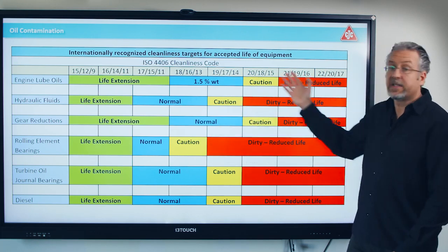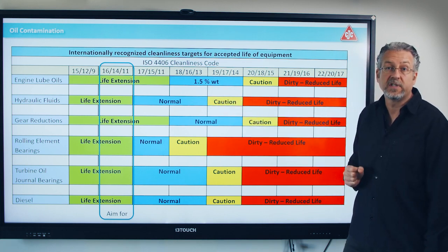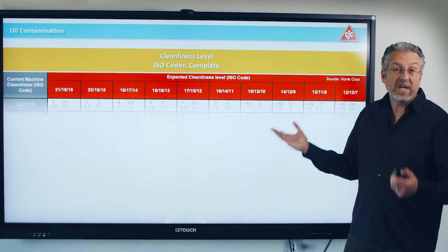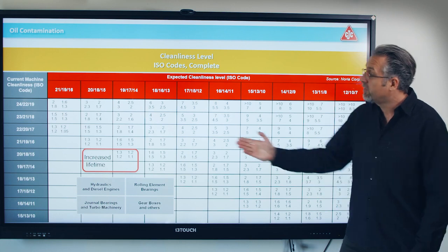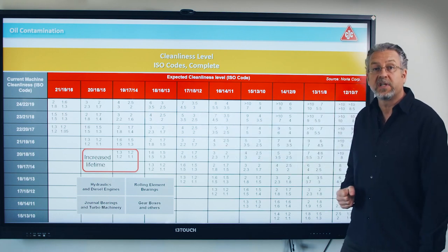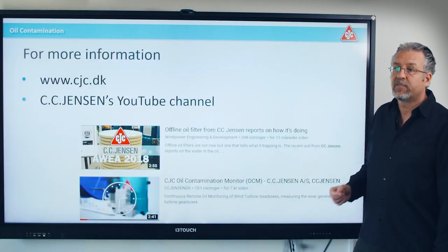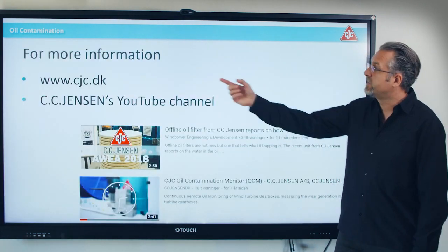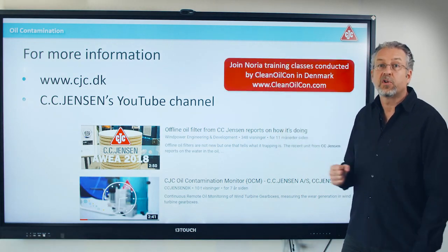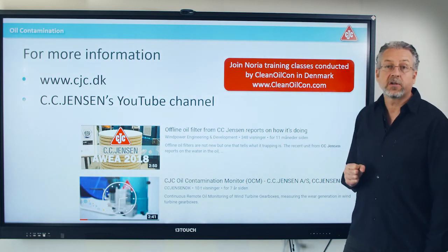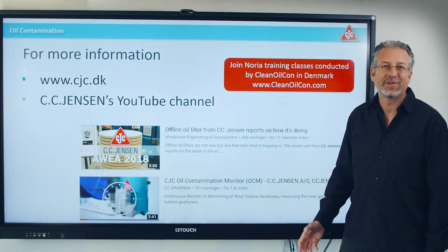This is why you need to focus on very clean oil. There's a big table with recommendations, but if you can, you should aim for an ISO code 16/14/11 or better. According to this table from Noria Corporation, you can see the increase in lifetime if you clean the oil for different component types. If you want to learn more, go to the CC Jensen website or the YouTube channel of CC Jensen. If you want to join some Noria classes here in Denmark, they will be conducted by CleanOilCon and you'll probably meet myself there. Thank you very much for listening and have a good day.